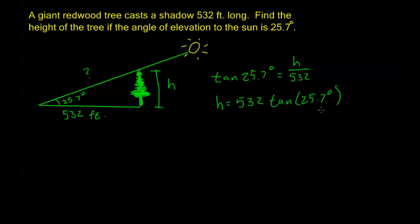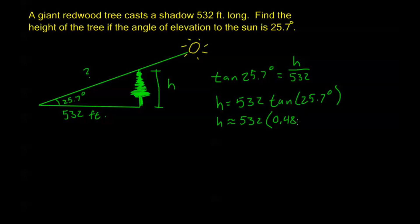Before we move on, an important note: up till now we've been using radian mode on our calculators. When you plug in anything with degrees, you need to switch your calculator mode back to degrees — hit the mode button and make sure you're in degree mode. Once we plug something into our calculator it becomes an approximation. Tangent of 25.7 degrees gives about 0.48127, so H is approximately 532 times 0.48127, which equals about 256 feet. The height of the tree is about 256 feet.